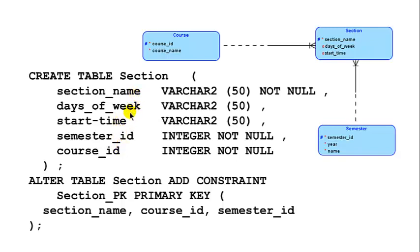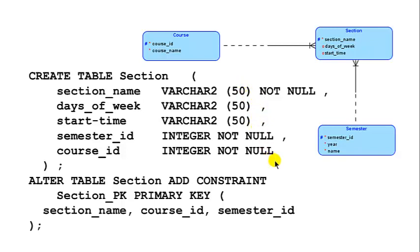The attributes are: section name, days of the week, start time, semester ID, and course ID. Notice that days of the week and start time are optional attributes — there is no NOT NULL constraint on them, so null values are allowed for those two, but not for the remaining three.